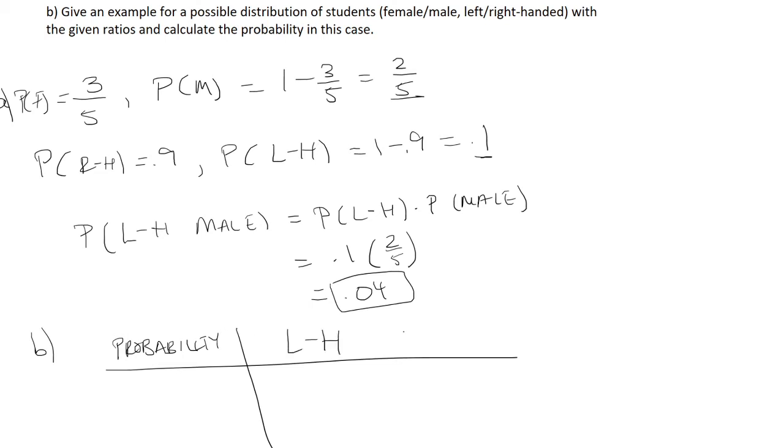So we want to find the probability. This will be all left-handed people column. This is the right-handed people column. This will be the total.